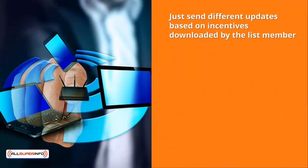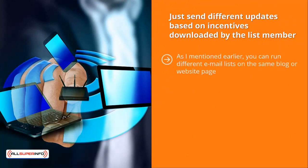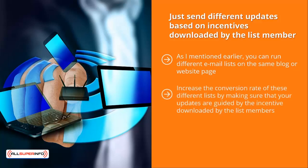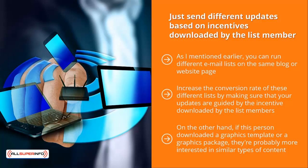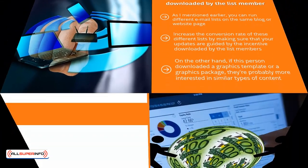Segment based on incentives downloaded by the list member. You can run different email lists on the same blog or website page; when people click these ads to sign up, they are signing up to different email lists that offer different incentives. Increase the conversion rate of these different lists by making sure your updates are guided by the incentive downloaded by the list member. For example, if the list member downloaded a video, chances are good they would want to watch other videos. If they downloaded a graphics template or package, they're probably more interested in similar types of content. Make sure your updates speak to these different incentive preferences to maximize your sales conversions.